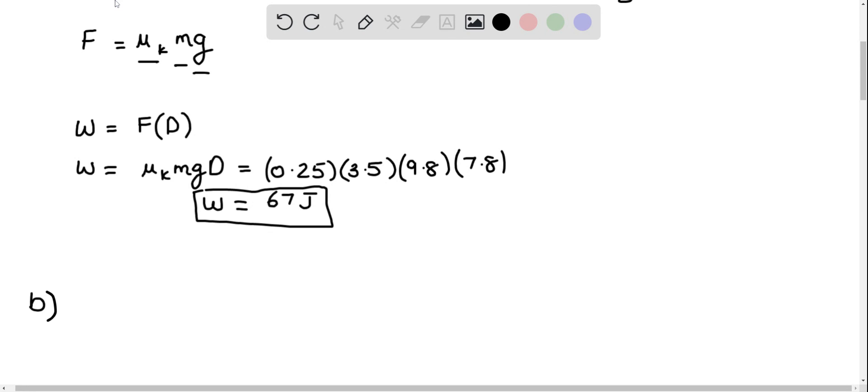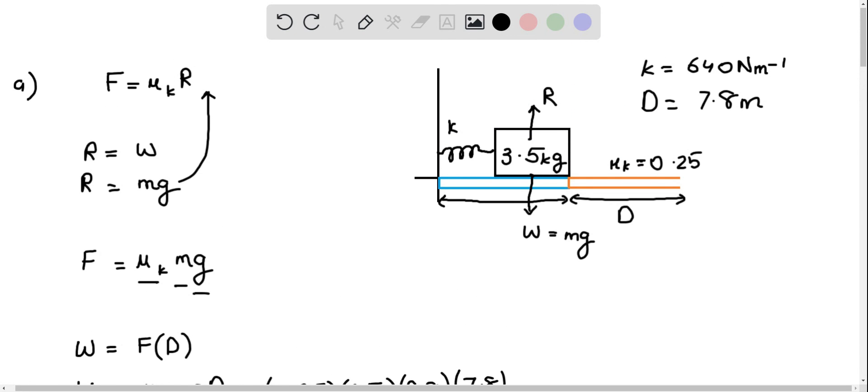Now, for the second part, we need to determine the maximum kinetic energy of the block. The block has a maximum kinetic energy just as it leaves the spring, traveling in this direction, and immediately before it comes onto the region where the friction acts. So it starts to slow down immediately when it hits the region with the friction.